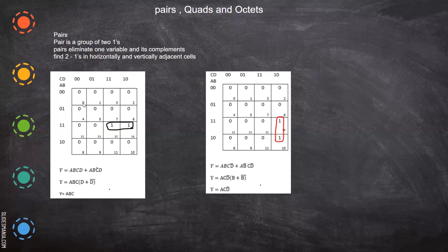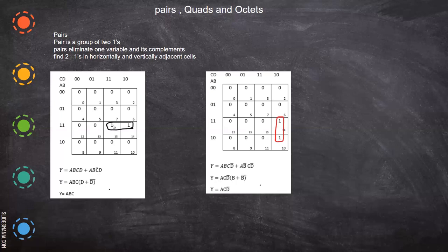For our reference, we can write the respective numeric positions 0, 1, 2, 3. This is for reference only; there is no need to write all these things, but it makes it easier to fill in. Now A, B, C, D means all ones, so 1,1 for AB and 1,1 for CD — you put 1 there. This is a minterm. For a minterm combination, you have to write a 1 in the respective cell of the K-map.